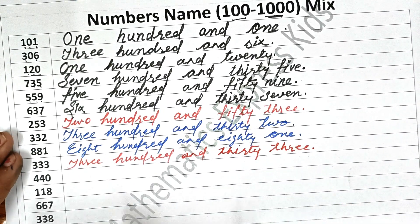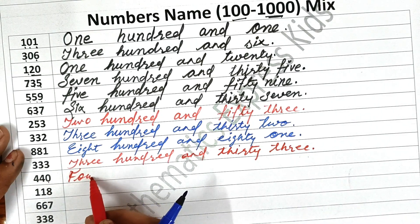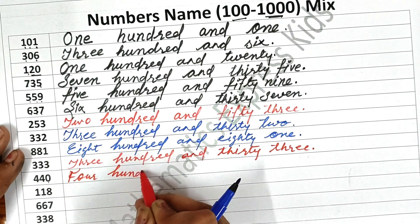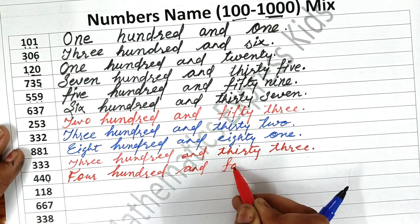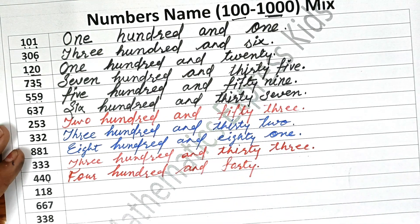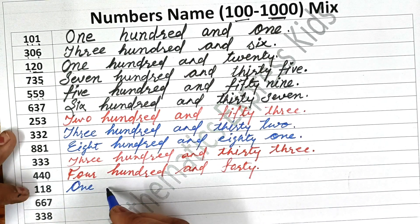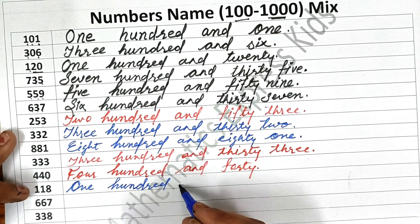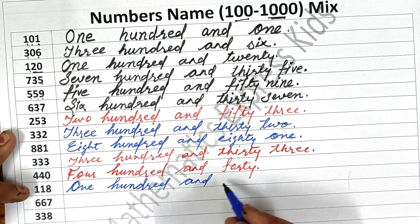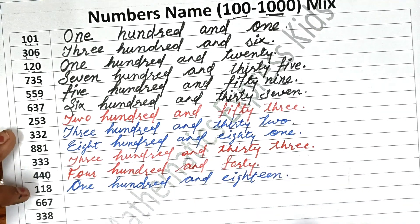The next one is four hundred and forty-three. Write four — F-O-U-R — then hundred — H-U-N-D-R-E-D — four hundred and forty — F-O-R-T-Y. Four hundred and forty. The next one is one hundred and eighty-three. One hundred — H-U-N-D-R-E-D — and eighty — E-I-G-H-T-Y — three. One hundred and eighty-three.